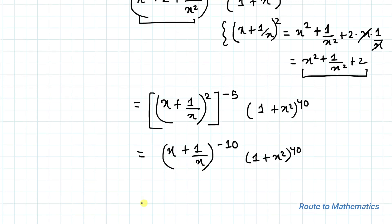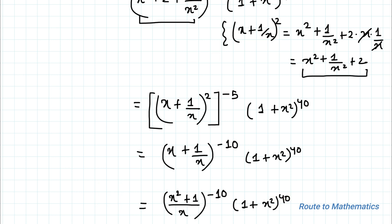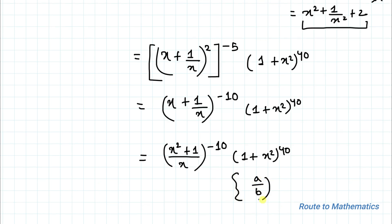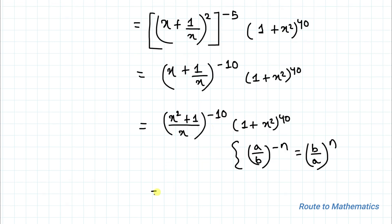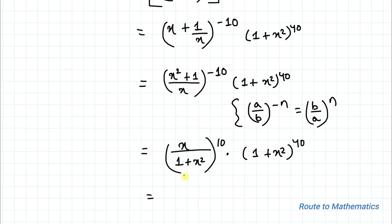Now taking the LCM, we have (x² + 1) to the power −10 over x^10, multiplied with (1 + x²) to the power 40. Using the rule (a/b)^(−n) = (b/a)^n, to change the negative power to positive we take the reciprocal. So we can write x^10 divided by (1 + x²)^10, multiplied with (1 + x²)^40.